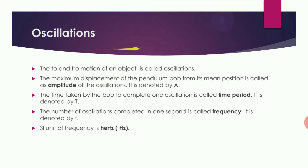Next, oscillations. What are oscillations? Oscillations are the to-and-fro motion of an object. For example, a swing moves to and fro — that is called oscillation.